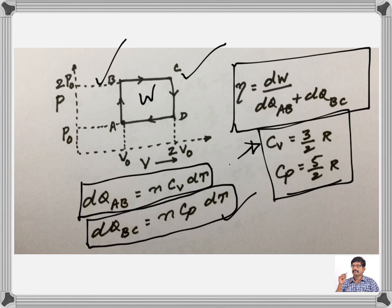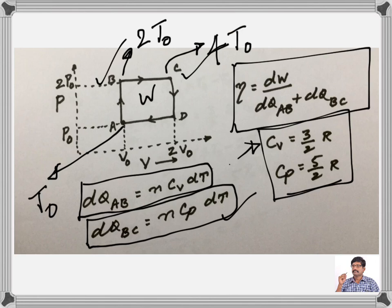Let us say the temperature at A is T0, then the temperature at B is 2T0 because at constant volume, pressure is directly proportional to absolute temperature. Similarly, at C, at constant pressure, volume is directly proportional to absolute temperature. So, the volume is 2V0, so the temperature is double, that is 4T0.